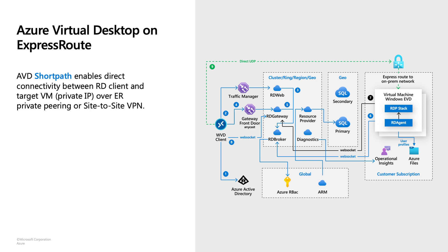What's new here is the AVD team introduced a new feature called ShortPath. With ShortPath, AVD will orchestrate a direct connection between the client and the target machines using the VM's private IP address. So if these virtual machines are connected to your users over a private connection and the clients can reach the private IPs, the client will send all the AVD traffic over ExpressRoute on this private connection. So to answer the question — yes, you can now enable AVD on top of ExpressRoute.